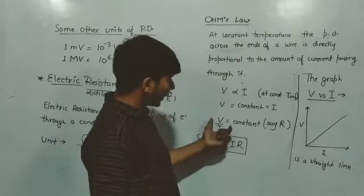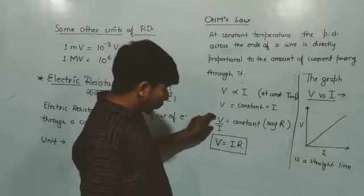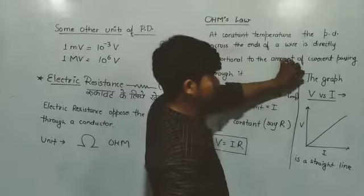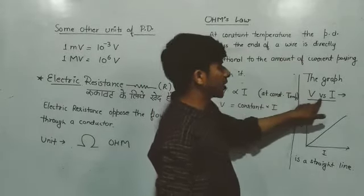You know that V or I, the ratio is constant. So if I plot a graph between V versus I...